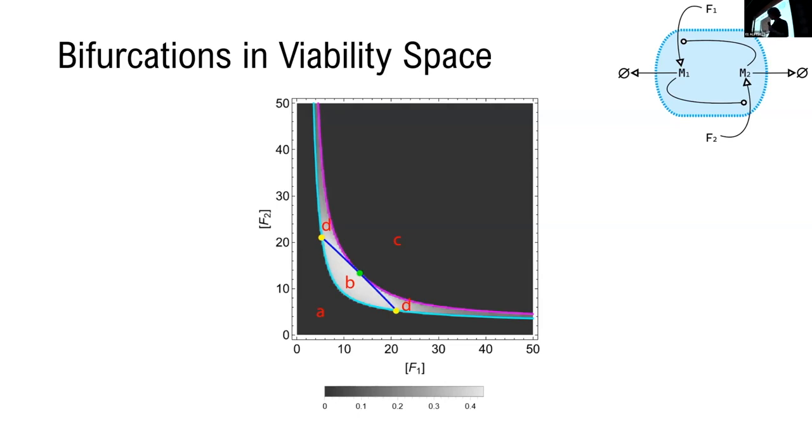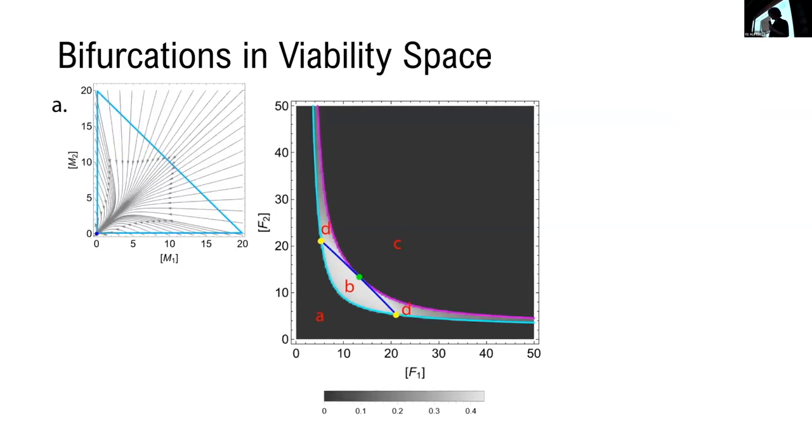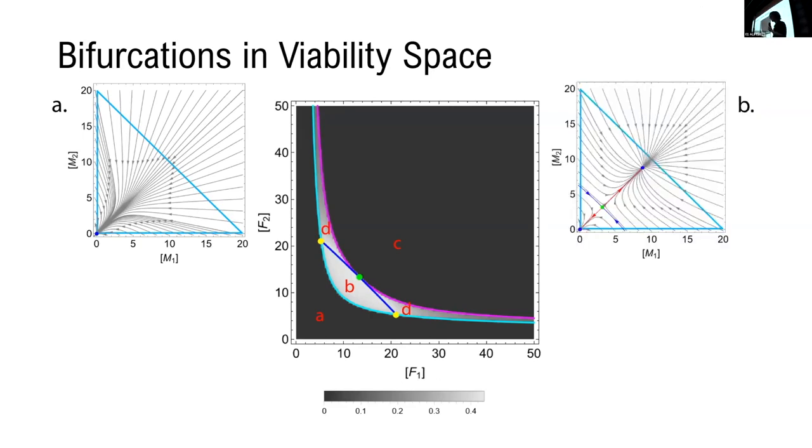And if we go from one to the other, starting with region A, we can see that the reason why the A region has no survival outcomes is because the entire viability space is characterized by a single attractor that's outside of the viability limits. No matter where you start in the viability region, you're eventually going to fall outside of it. And then if we go into B, we see a fold bifurcation where we get a new stable equilibrium point, but importantly, it appears within the viability region.